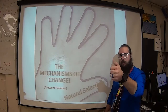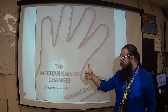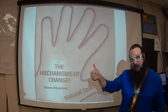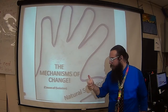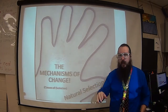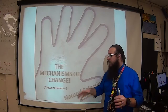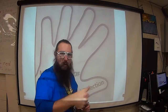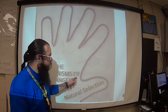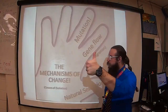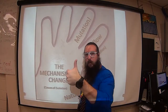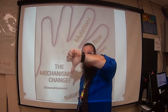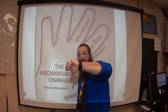Natural selection is on the thumb because, like the thumb being your strongest digit on the hand — the big, main one, what separates us from the non-primates — natural selection is the main mechanism really driving evolution. Think of it like a thumb: we can increase genes that are favorable, or we can decrease genes that are unfavorable.